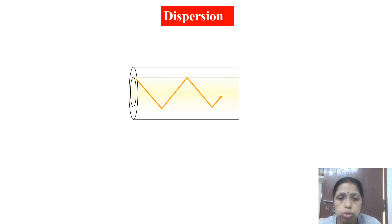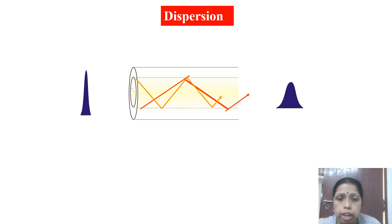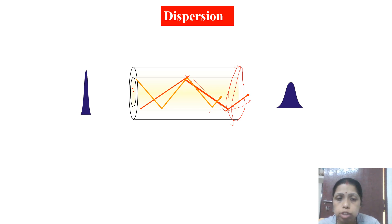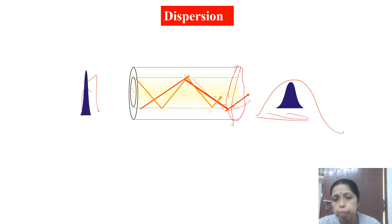Looking at this diagram, one mode is propagating and another mode is also propagating. At the other end of the fiber, the position of both modes is not the same — one reaches earlier and the other reaches later. If both modes were to reach at the same time, you would get the same pulse at the output. Because they arrive at different times, you get pulse broadening at the output. This mechanism is called dispersion.